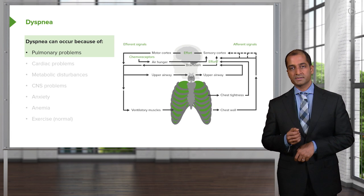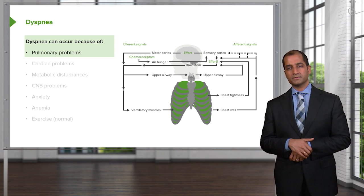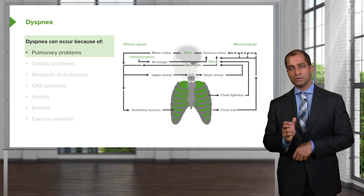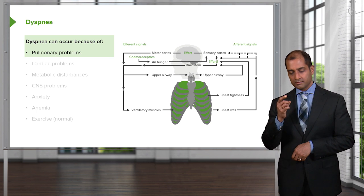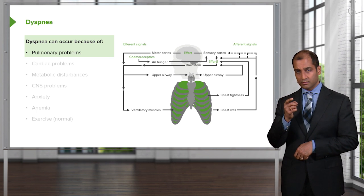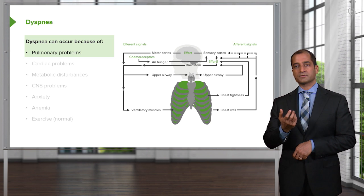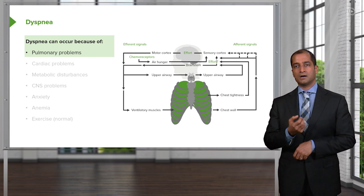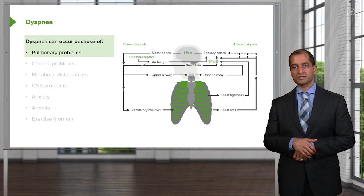Now in physiology, would you please tell me what is the most important chemoreceptor? Is it central or peripheral? Central. Right now, as you're sitting there watching me, it's my central chemoreceptors that are always going to detect oxygen and carbon dioxide. What are the central chemoreceptors more sensitive to? Carbon dioxide changes.